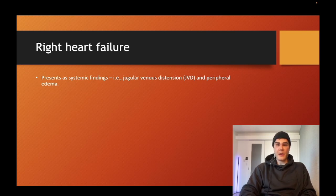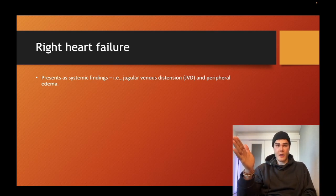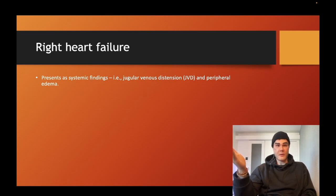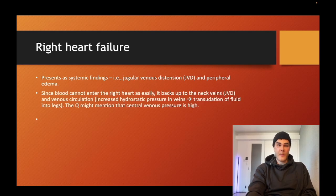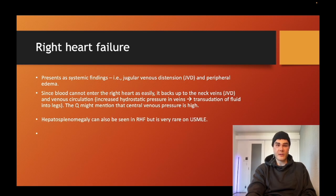Peripheral edema occurs because if you have impaired venous return to the right heart, you have increased venous hydrostatic pressure. With left heart failure we had increased pulmonary capillary hydrostatic pressure; with right heart failure we have increased central venous pressure, which makes its way down to the veins in the legs — increased venous hydrostatic pressure causes transudation into the interstitium of the legs. So you're going to have increased hydrostatic pressure in the veins and neck veins.